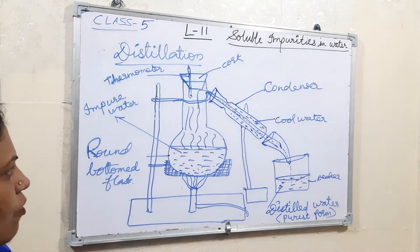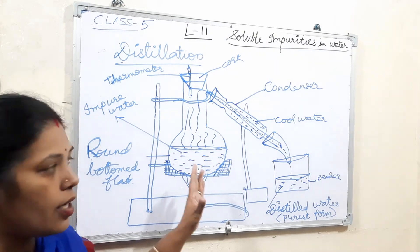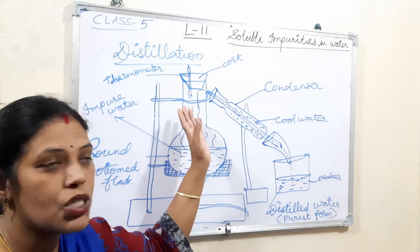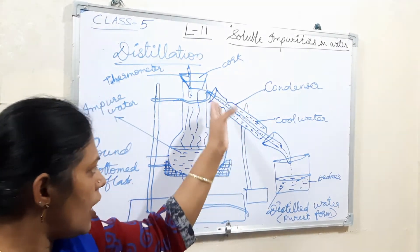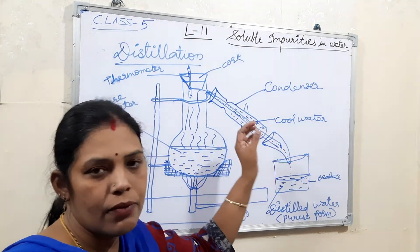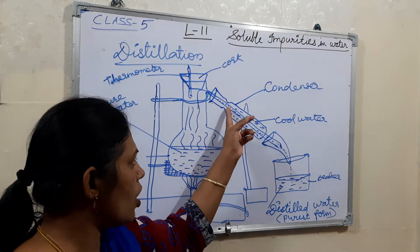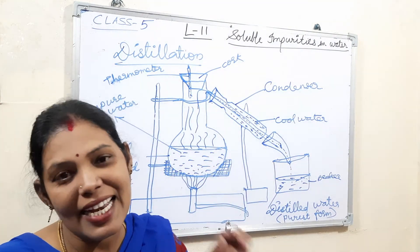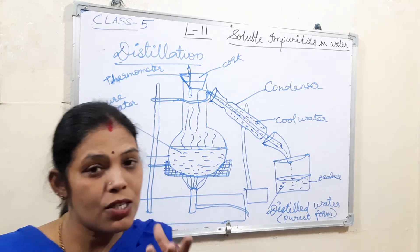To summarize the distillation method: take water in a round bottomed flask and heat it. When the water boils, it changes into steam which travels through the condenser where cool water is circulated. The steam then changes back into water and is collected in a beaker — that is the distilled water.